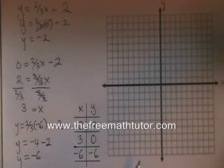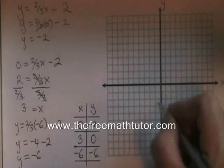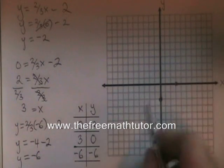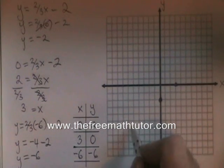Now it's time to put these points on our coordinate plane. Zero, negative two is here. Three, zero is here. And negative six, negative six is here.